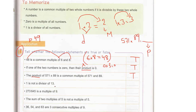One is not a divisor of 13 — false. What did we say before? We said that one is a divisor of all numbers, so it is a divisor of 13. So false.